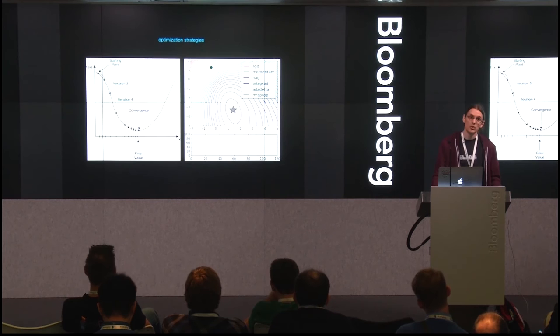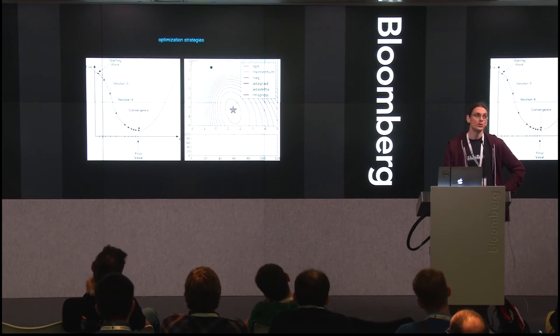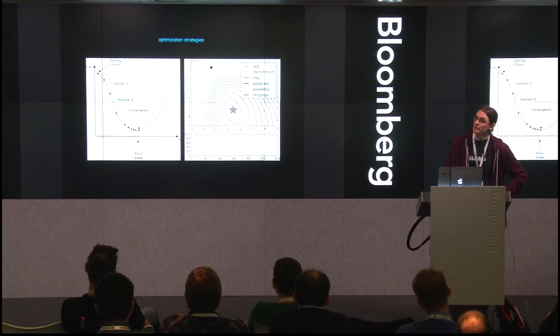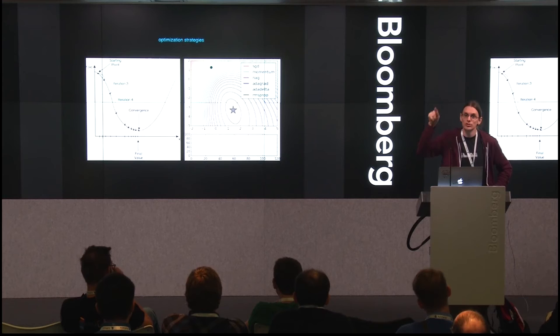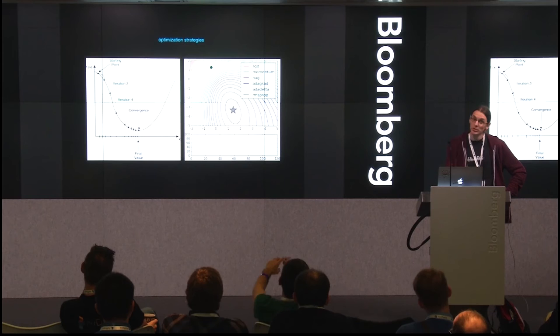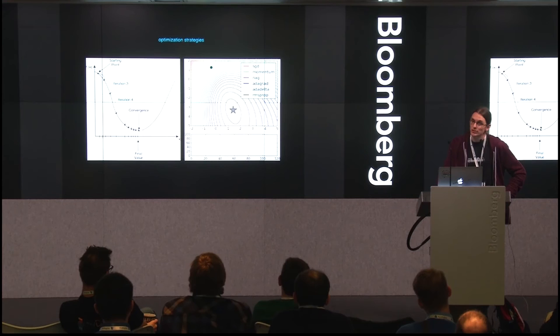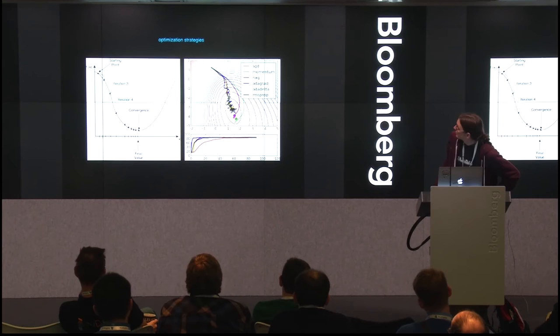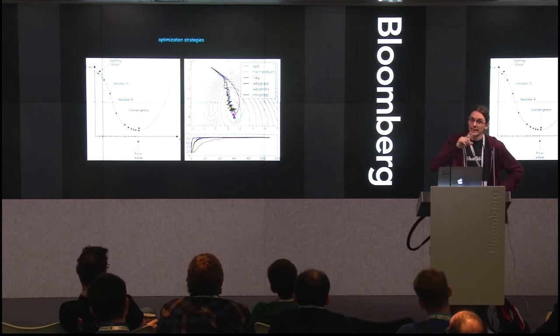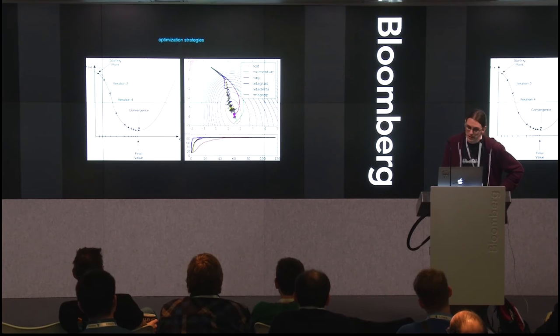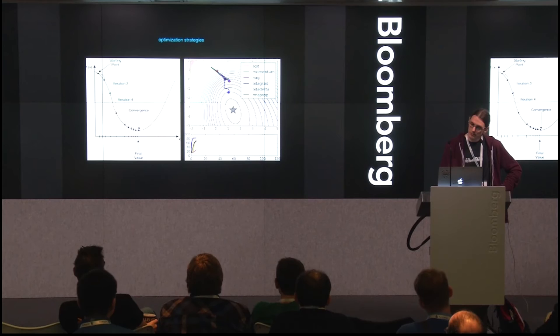Convergence means starting somewhere in your error space and iteratively crawling toward the minimum of your loss function. The different optimization strategies include stochastic gradient descent, and then momentum-based variants and other probabilistic methods — these are first-order optimization strategies. That covers the theory.